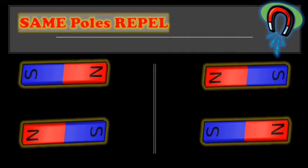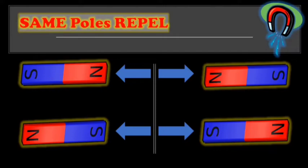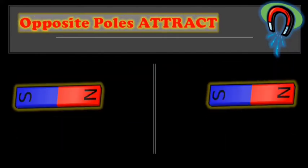Take note of this class that when two magnets have the same poles are placed close to each other, they repel or push each other. But when two opposite poles are placed together, they attract or pull each other.